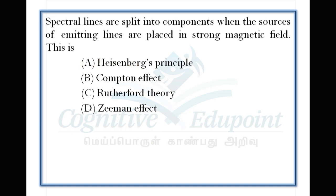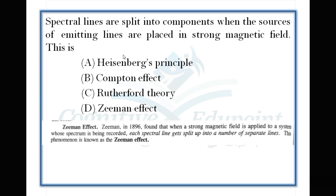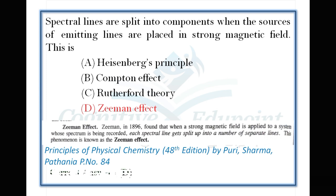Next question: Spectral lines are split into components when the sources of emitting lines are placed in a strong magnetic field. This is spectroscopy matching. In a magnetic field, spectral lines are split due to the Zeeman effect. With an electric field, it's the Stark effect. The correct answer is Zeeman effect. Correct answer is D.